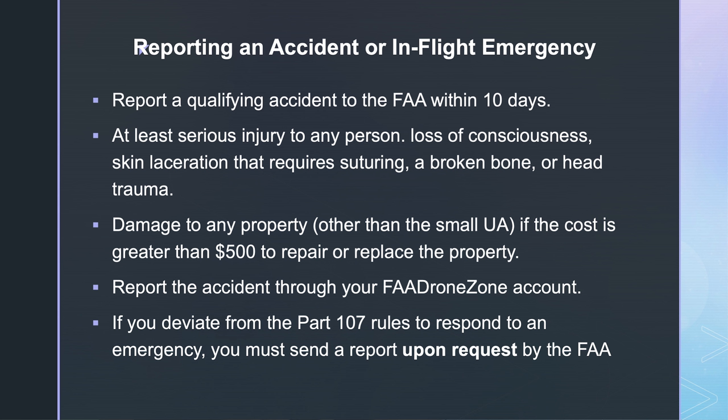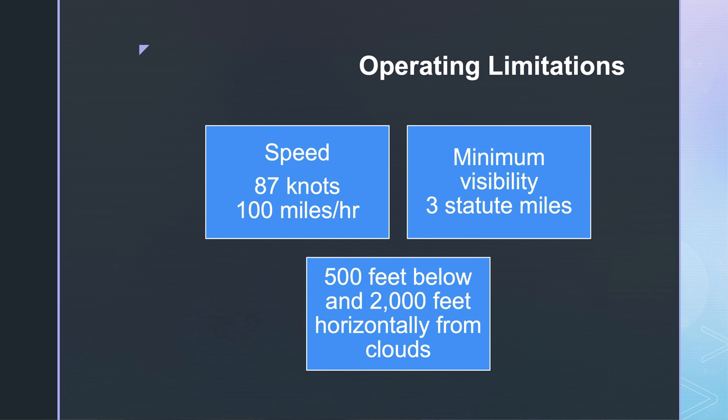You need to report the accident through your FAA drone zone account. And if you deviate from the Part 107 rules to respond to an emergency, you must send a report upon request by the FAA. The key word here is upon request by the FAA. Operation limitations. You must not fly your drone over 87 knots or 100 miles an hour. Your minimum visibility at all times is 3 statute miles. You need to be 500 feet below the clouds and 2000 feet horizontally from clouds.